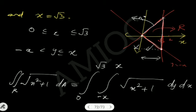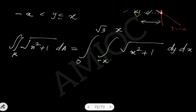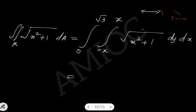By Fubini's theorem, the double integral over the region R of root of x squared plus 1 dA equals the iterated integral from 0 to root 3, and from minus x to x, of root of x squared plus 1 dy dx.